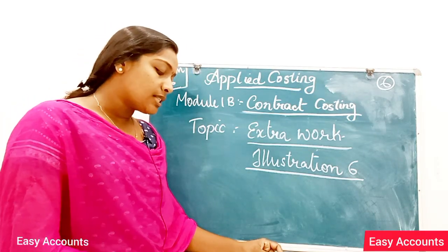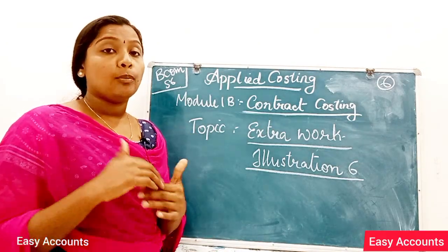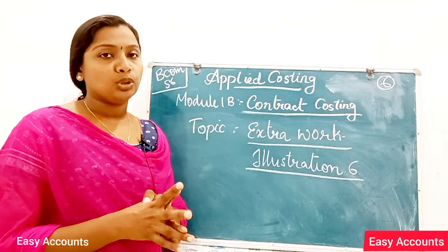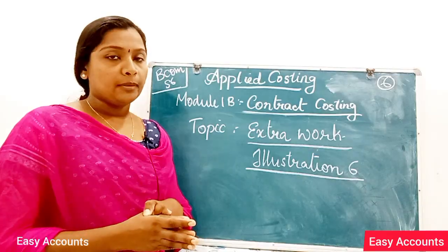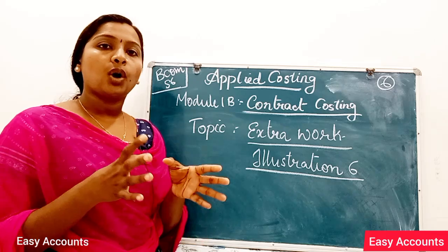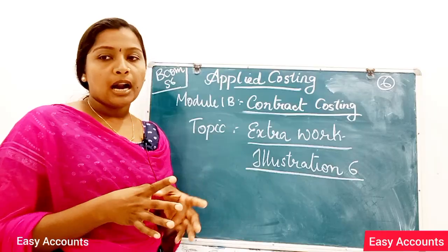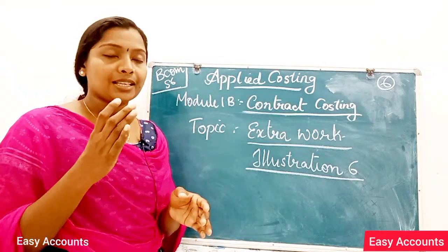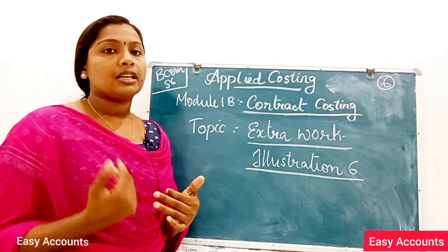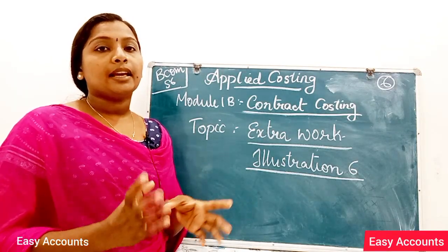Any profit or loss in that connection can be transferred to the profit and loss account. If the extra work is not big, what we do is we do a contract. In the case where the extra work is small, we have to debit the extra work and transfer the extra work on the contract account.